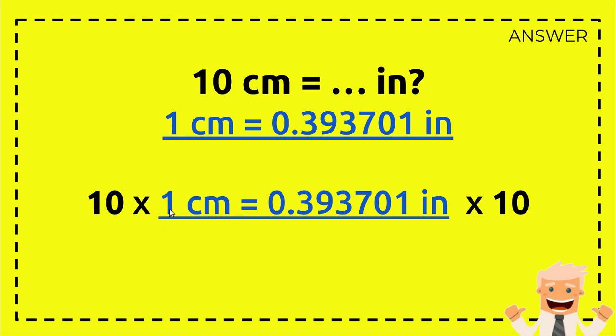So 10 times 1 equals 0.393701 times 10. Just put it on the left side of the equal sign and on the right side of the equal sign, multiply it with the number next to it.